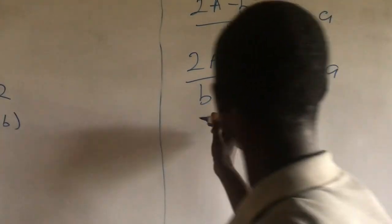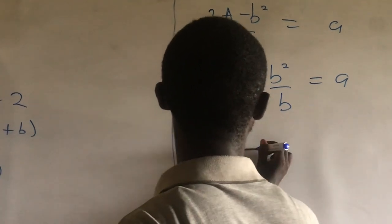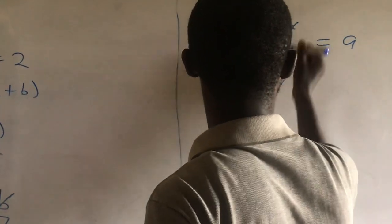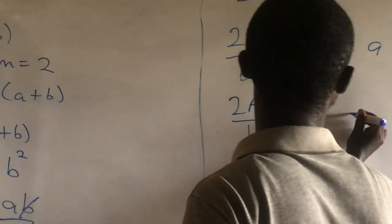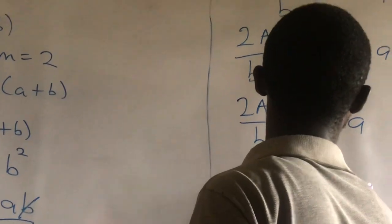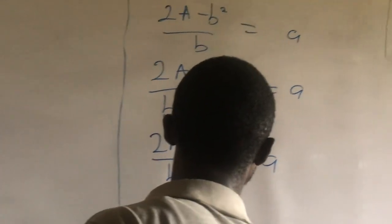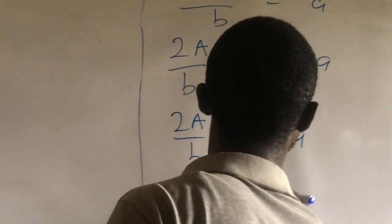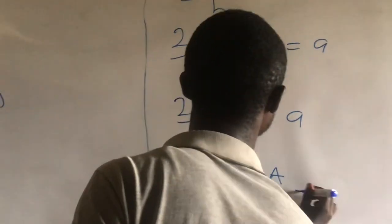So to solve this, it becomes 2A over B minus, this will cancel this, minus B, is equal to A. Therefore, A is equal to 2A over B minus B.